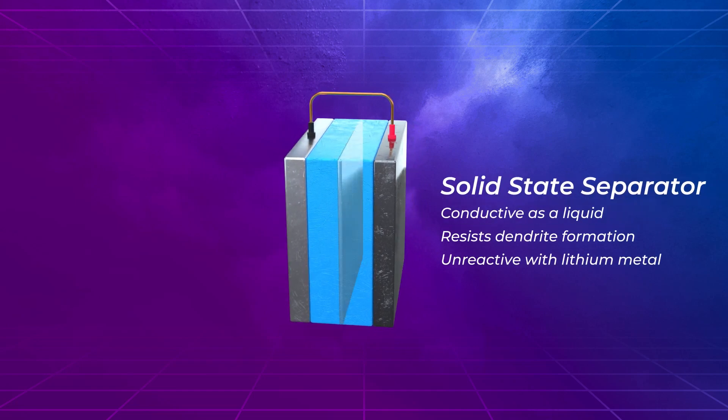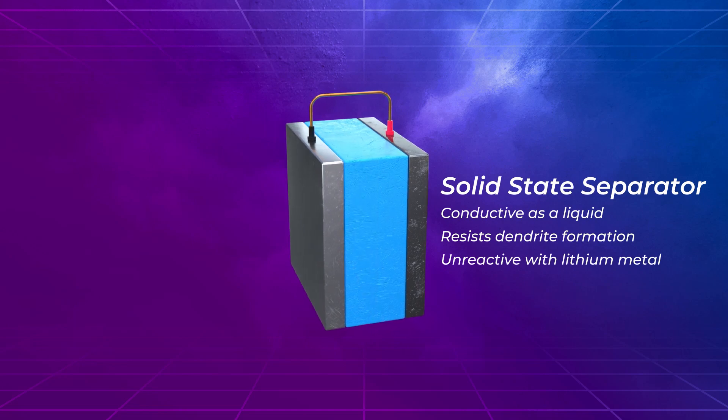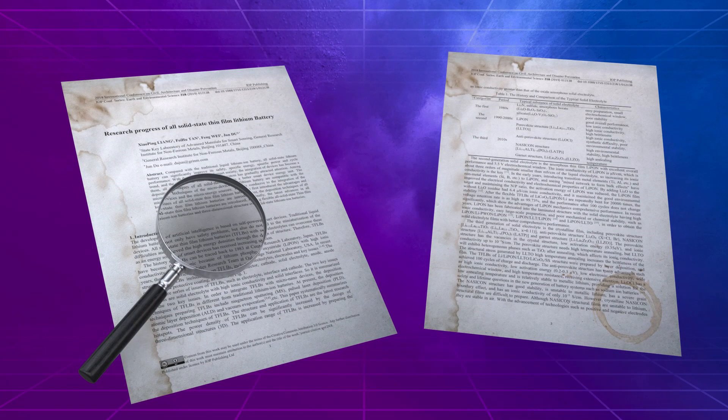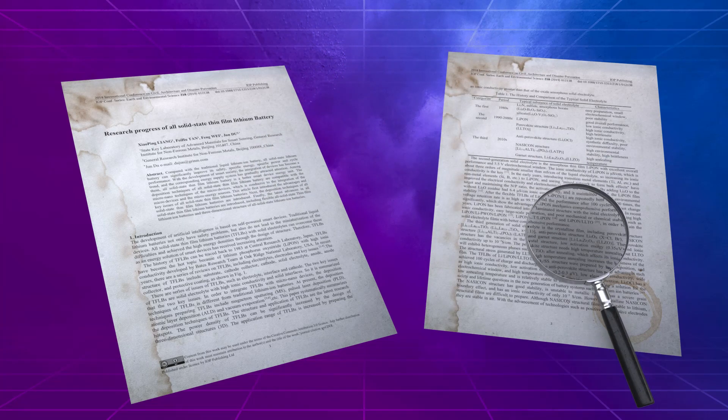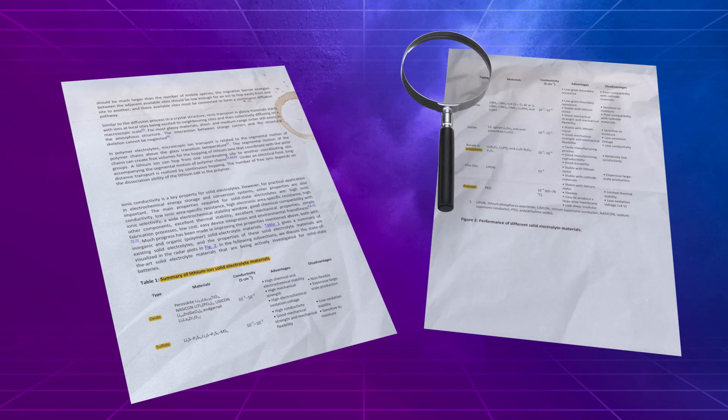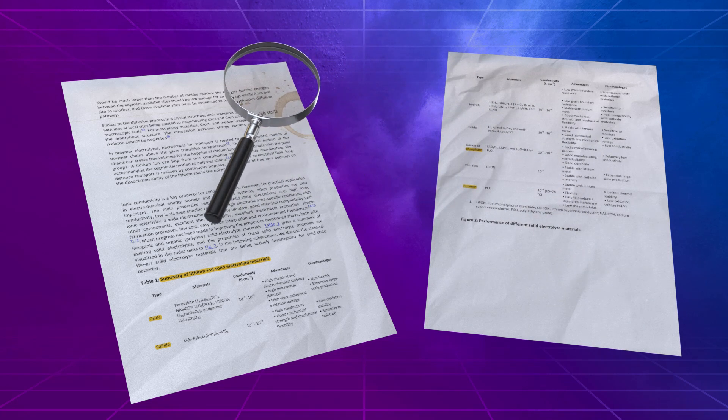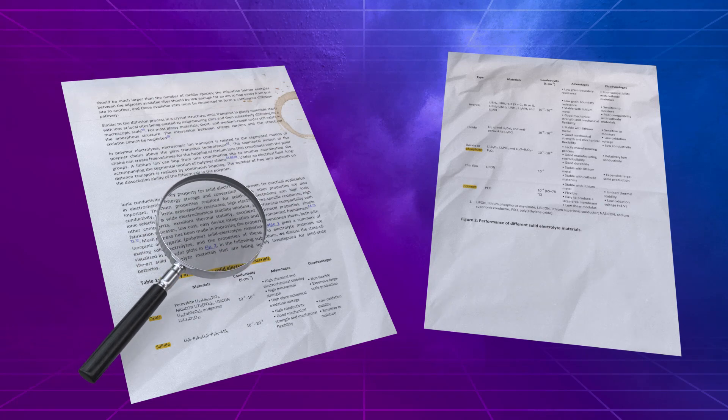It is widely believed that to make a lithium metal anode battery, one needs a solid-state separator which is about as conductive as a liquid but resists dendrite formation and does not react with the metallic lithium. For more than 40 years, the industry has been searching for such a material. In the past few years, materials such as oxides, sulfides, phosphates, solid polymers, ceramics, and even glass have been used as solid electrolytes.